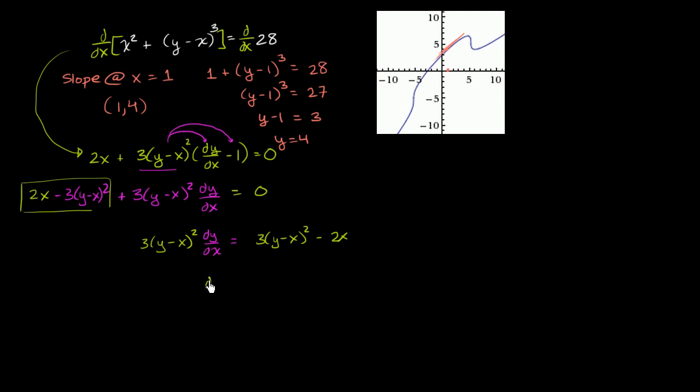we've done this multiple times already to solve for the derivative of y with respect to x. The derivative of y with respect to x is going to be equal to 3 times (y - x) squared minus 2x, all of that over 3 times (y - x) squared. And we could leave it just like that for now.